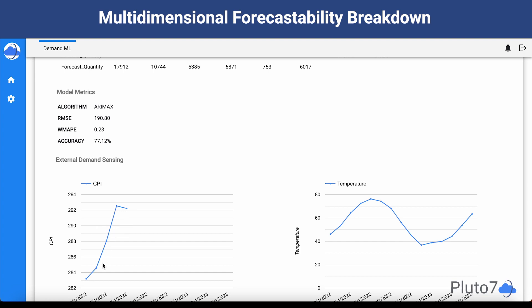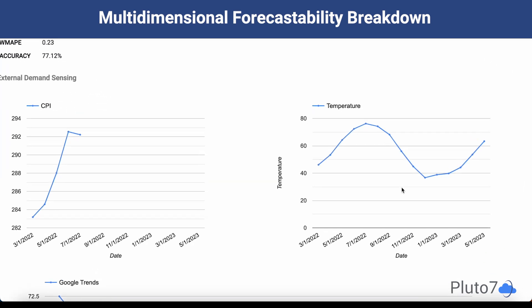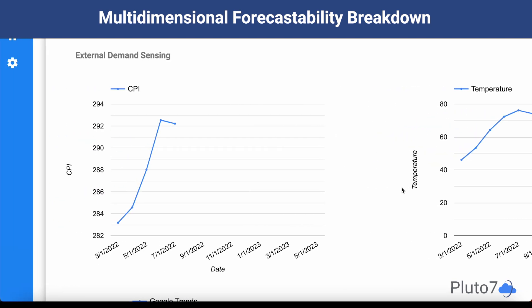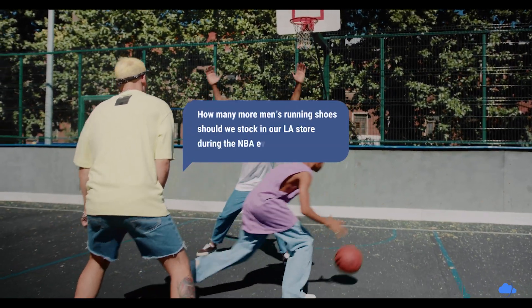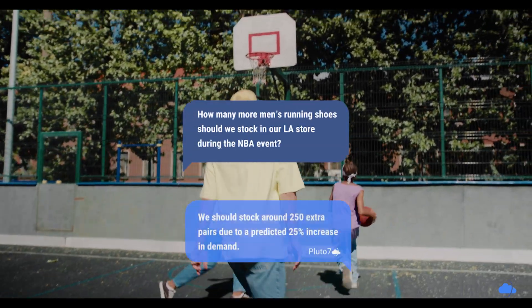DemandML transcends the limitations of traditional forecasting. It combines historical data with 250 real-time external demand signals, providing an enriched, realistic, and actionable forecast. DemandML doesn't just track trends — it helps you act on them.